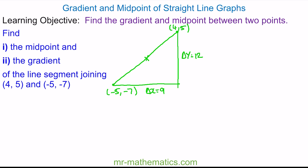So the midpoint will be half of the change in x, which is 4.5, added from the -5, which is -0.5. And the change in y is half of 12, which is 6, added to the -7, which is -1. So our midpoint is (-0.5, -1).